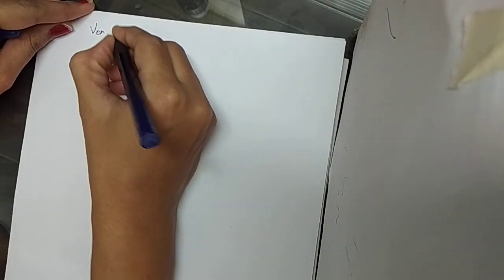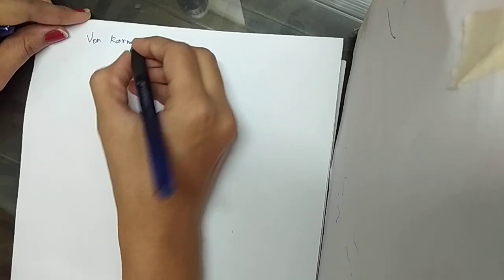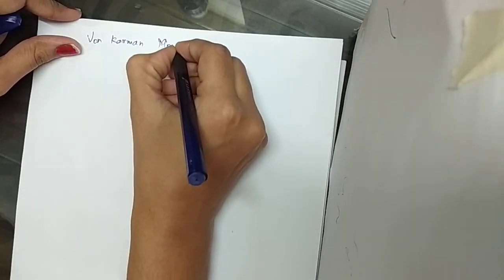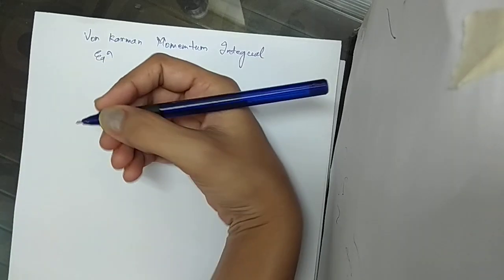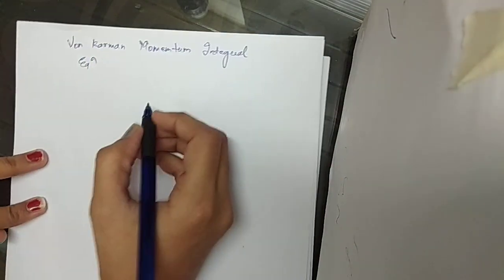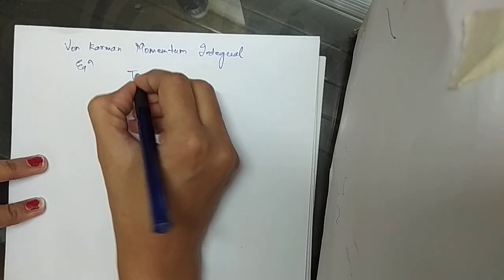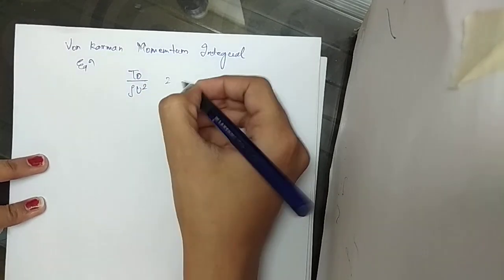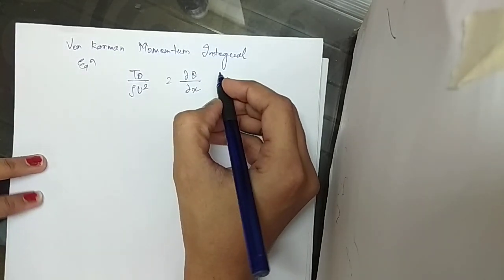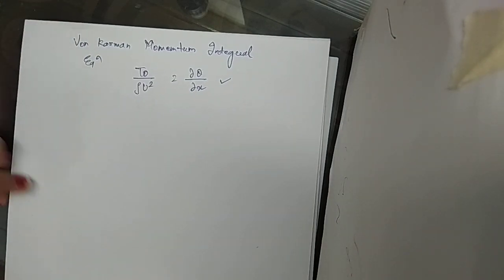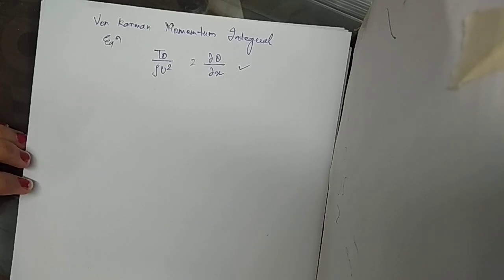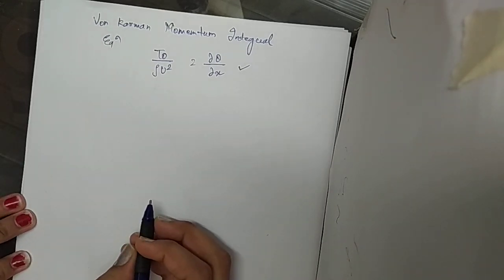Hello everyone. Last time we had completed our Von Kármán momentum integral equation. We had completed the derivation for this equation and it came to be τ₀ upon ρU² equals to dθ/dx. This was the equation for drag force due to a flat plate on a boundary layer, the effect of drag force.